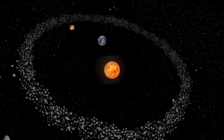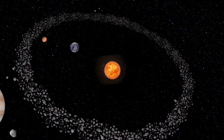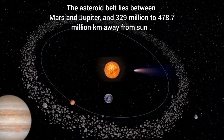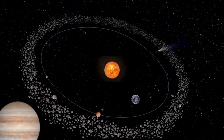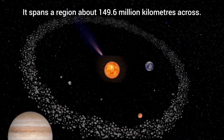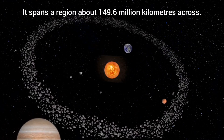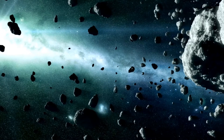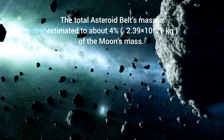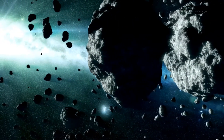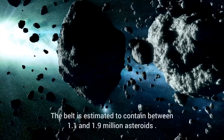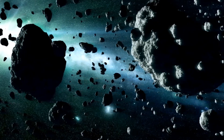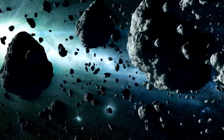The asteroid belt lies between Mars and Jupiter, about 329 million to 478.7 million kilometers away from the Sun. It spans a region about 149.6 million kilometers across. The total asteroid belt's mass is estimated to be about only 4 percent of the Moon's mass. The belt is estimated to contain between 1.1 and 1.9 million asteroids, some larger than 1 kilometer in diameter and millions of smaller ones.